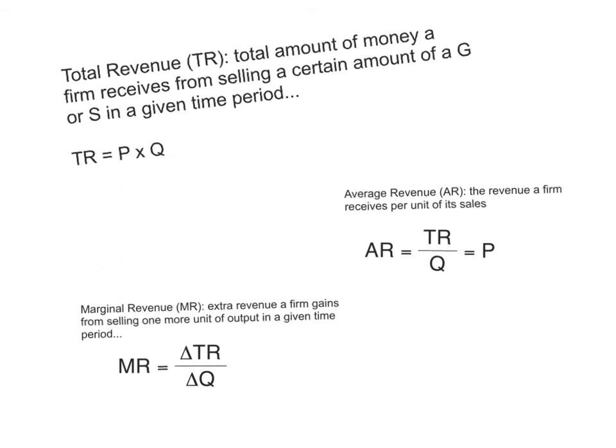Let's start by taking a look at the concept of total revenue. Basically, total revenue is the total amount of money that the firm receives from selling a certain amount of a good or service in a given time period — the total amount of money the firm receives for selling its output. It's calculated by multiplying price and quantity.